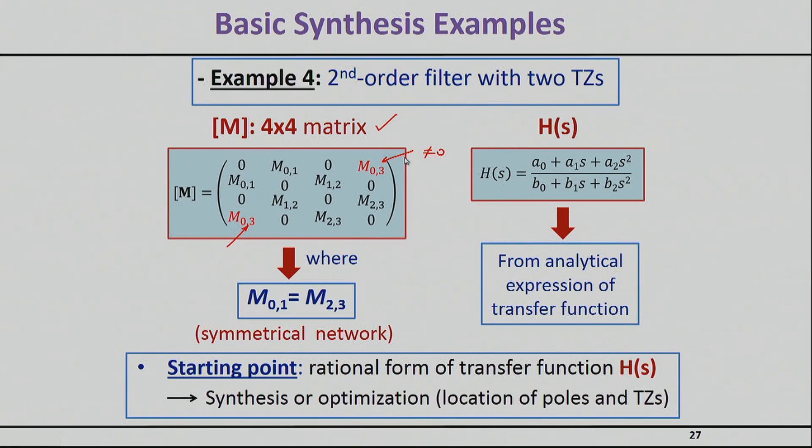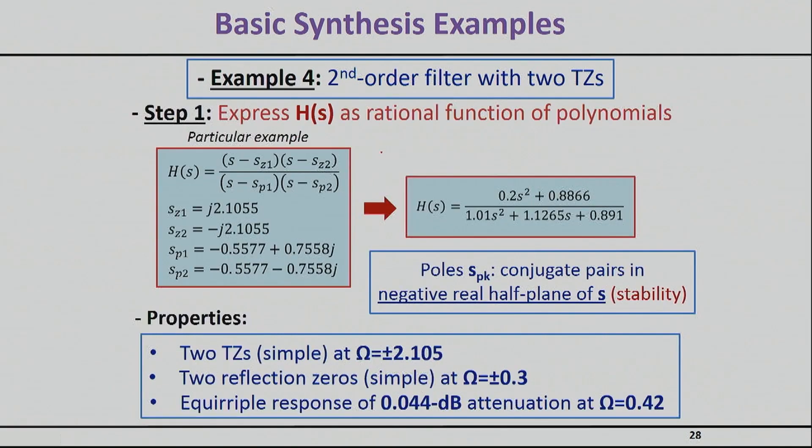The transfer function is going to include basically two poles—it's a second order—and two transmission zeros which you will see in the numerator, so both the numerator and the denominator are basically second order polynomials. Now you can choose where your transmission zeros lie and where your poles lie. That depends exactly on what type of transfer function you want to implement.